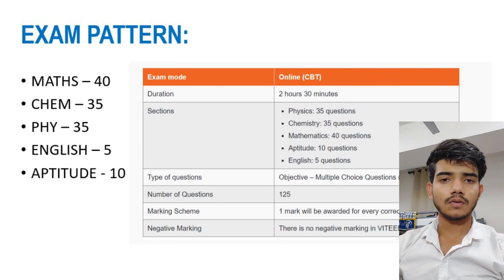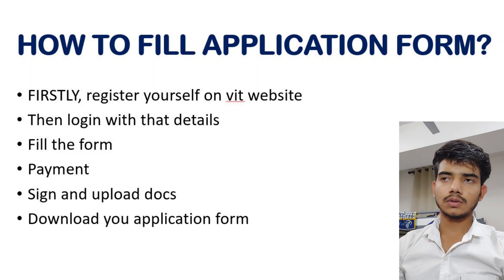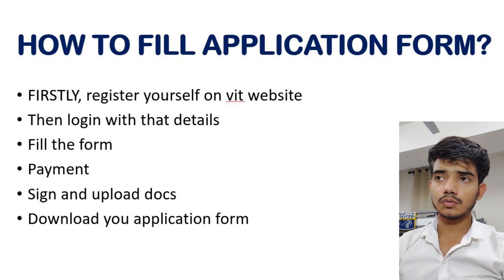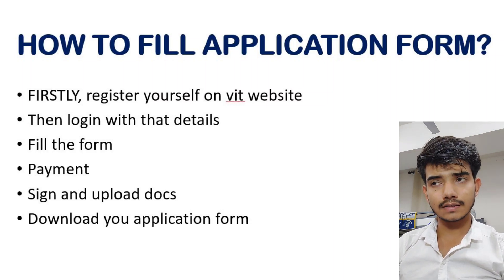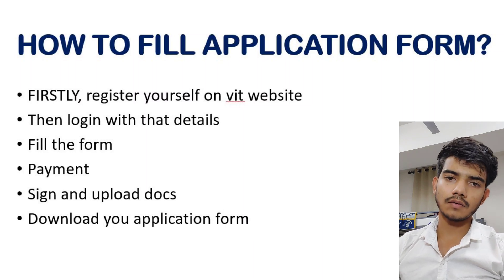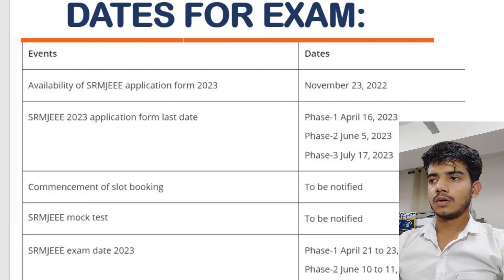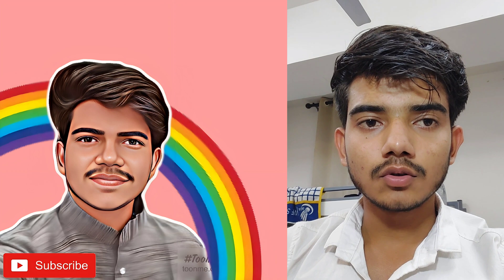To fill the application form, first go to the website of VITEEE — I will put the link in the description. Register yourself on the website, then sign in through that registered ID. Then fill the application form, do the payment, and they will ask for your photo and signature. Finally, you will get your application form on your Gmail and you can also download it from there.